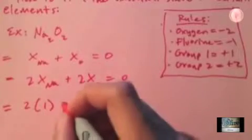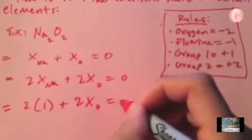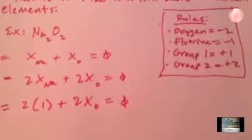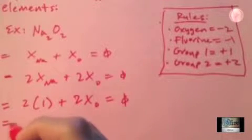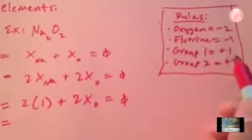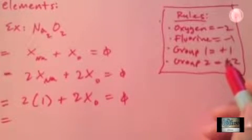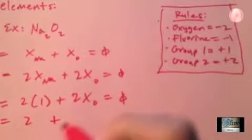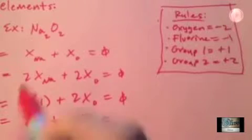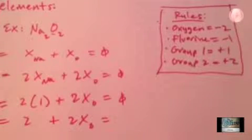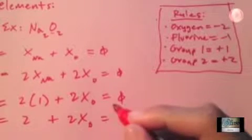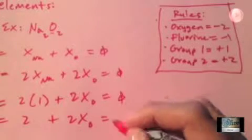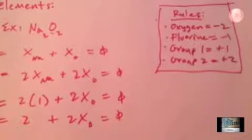When you deal with sodium, you put over here two times plus one, because sodium is plus one. That's in Group 1, anything in Group 1 is plus one. We're looking for oxygen. Whatever you're looking for, that equals zero over there.